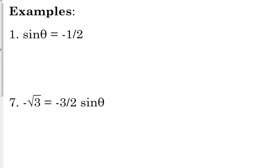There are some very simple ones. For number one, we're going to find the solutions for this equation between zero and two pi. We're only talking about angles on the unit circle between zero and two pi — no negative angles, no angles more than one rotation. The question is: where is the sine of an angle equal to negative one half?